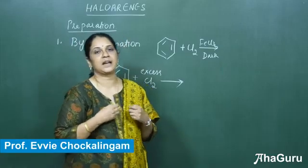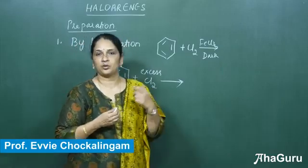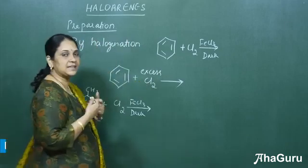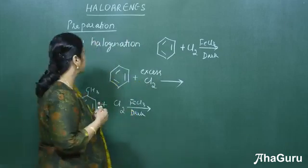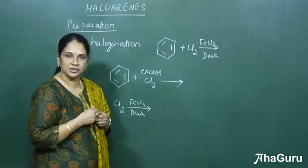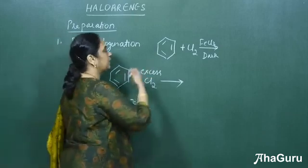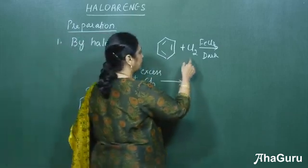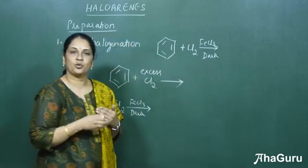We will see haloarenes, that is halogen substituted to an aromatic ring. First, let us see the preparation methods. The first preparation is by halogenation. We will take benzene, halogenate it with chlorine. This can be either bromine or iodine.